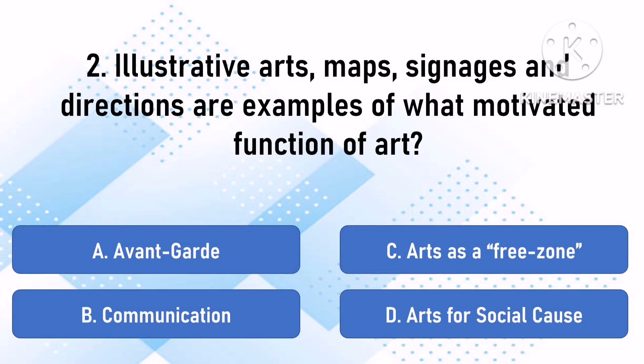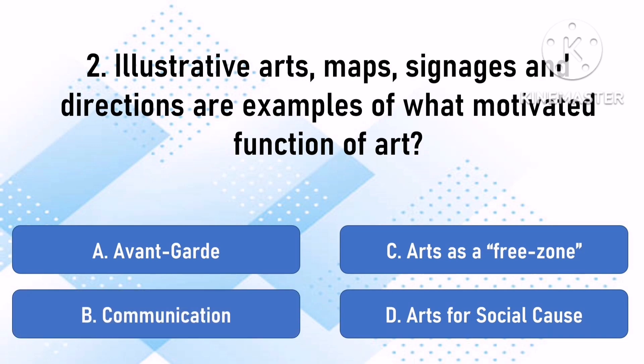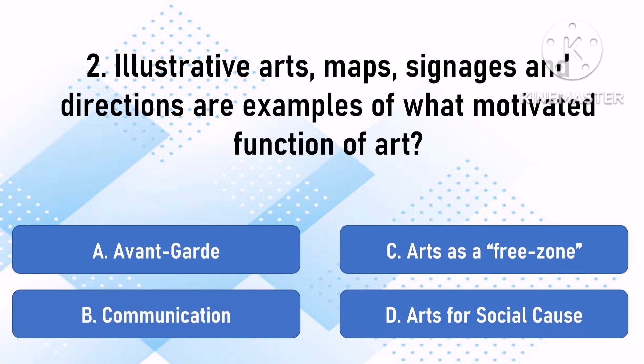Number 2. Illustrative arts, maps, signages, and directions are examples of what motivated function of art? A. Avant-garde, B. Communication, C. Arts as a free zone, D. Arts for a social cause. The correct answer is letter B, Communication.